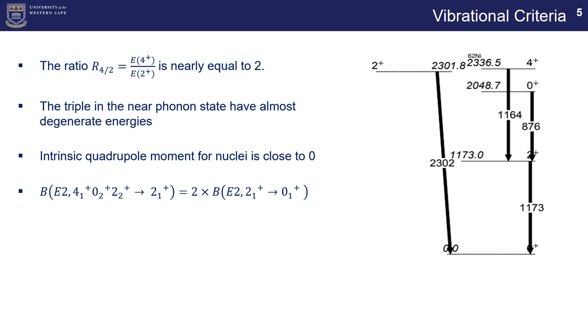And following that, we then have to look at the B(E2) value for the 4 plus, second zero plus, and second two plus to the first two plus is equal to twice that of the B(E2) value for the first two plus to the ground state value. That is another way that we can determine whether or not the nucleus is vibrational and that's what we'll explore throughout the project.